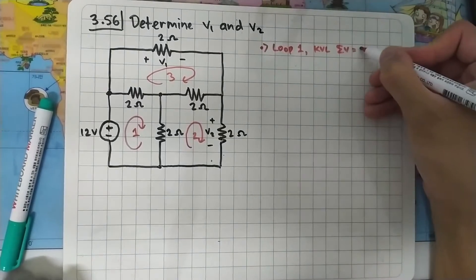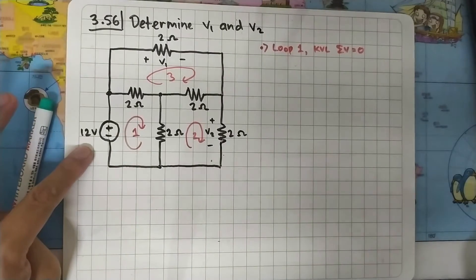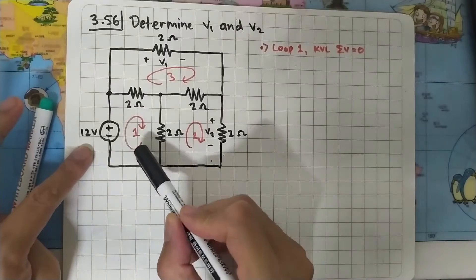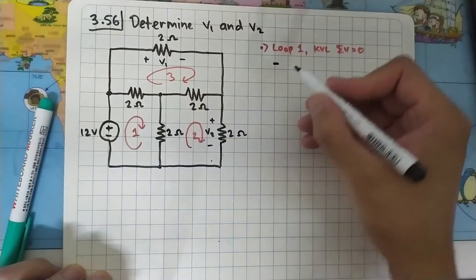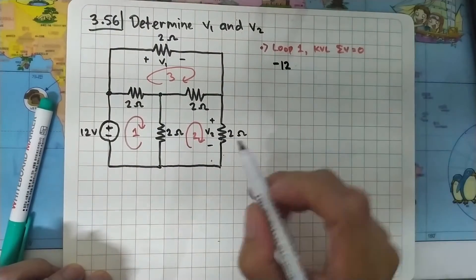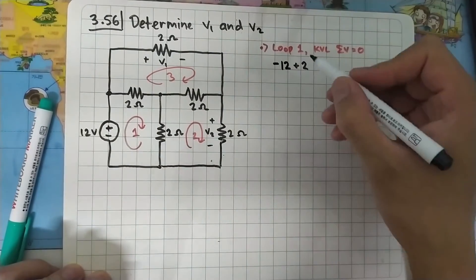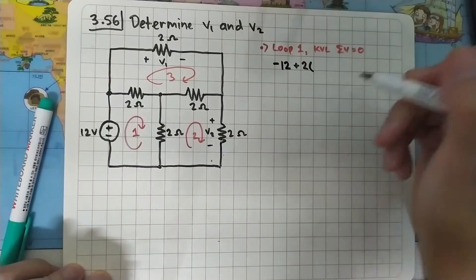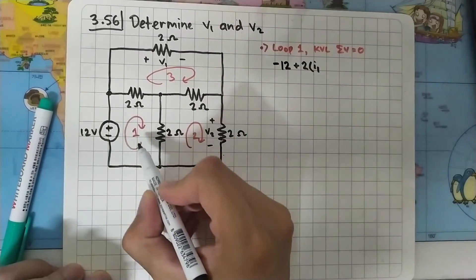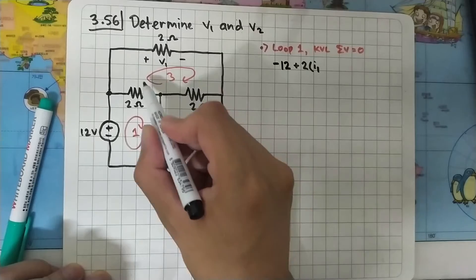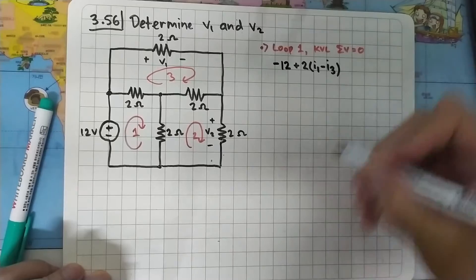Let's start with loop 1 and use KVL, which states that the sum of voltages in a loop equals zero. Starting from the voltage source, the current is flowing from negative to positive so the sign is negative and the value is 12 volts. Moving on to the 2-ohm resistor, the focus is loop 1 so we multiply by I1, but I3 is flowing in the opposite direction so we subtract I3 from I1.